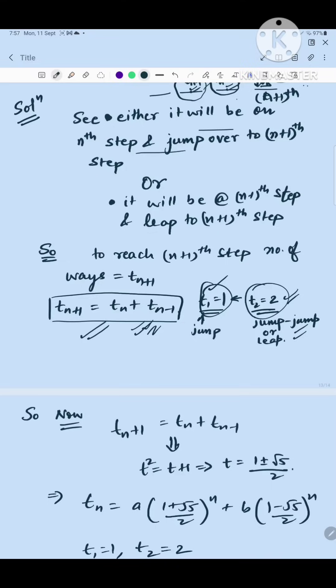So if this is the equation t_{n+1} is equal to t_n plus t_{n-1}, I will make a quadratic equation which says t² is equal to t plus 1, and the roots of this quadratic equation t² minus t minus 1 equals 0 will be t is equal to (1 ± √5) / 2.